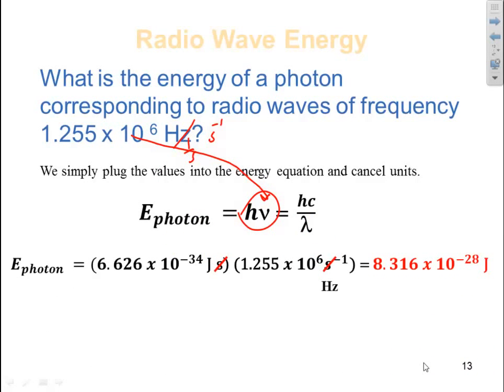So we have the energy of a photon, 6.626 times 10 to the negative 34th joule seconds, times the frequency, which is 1.255 times 10 to the 6. That was hertz, so I plugged in seconds minus 1. Our seconds cancel, leaving me only in joules, which is an energy term. If I multiply the two numbers together, I get 8.316 times 10 to the negative 28th joules. That is the energy associated with a photon that has the frequency of 1.255 times 10 to the 6 hertz.